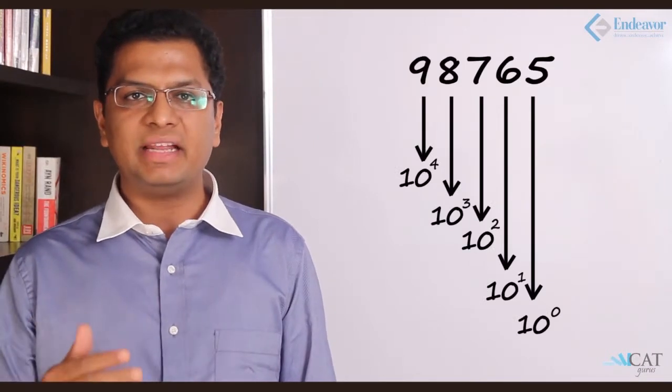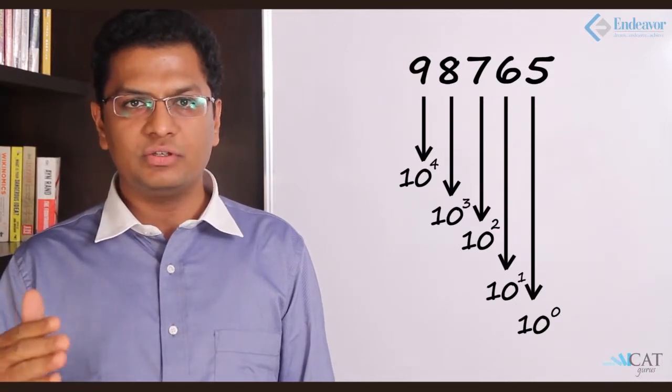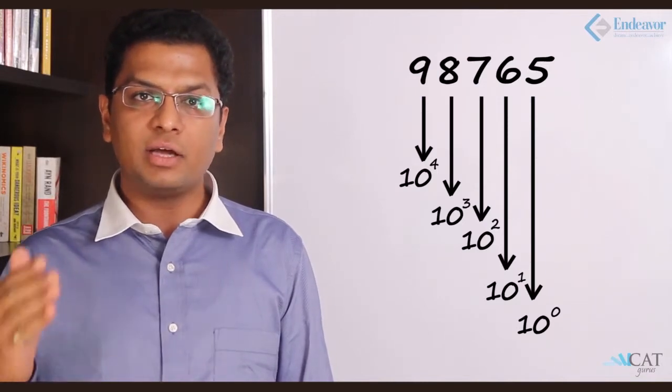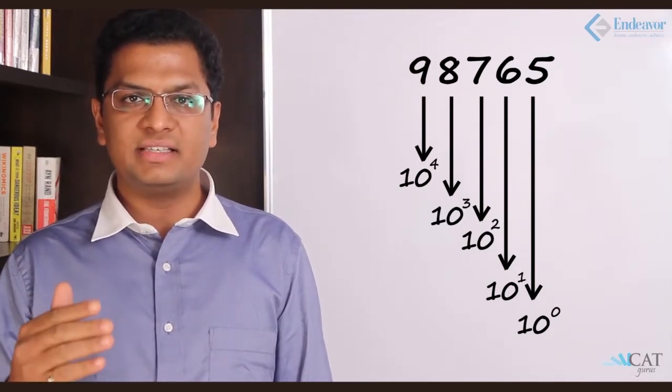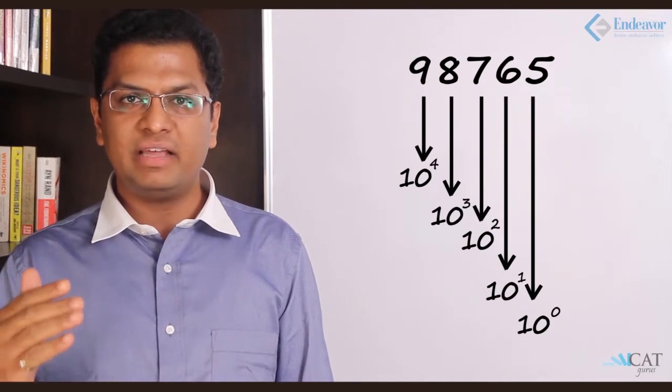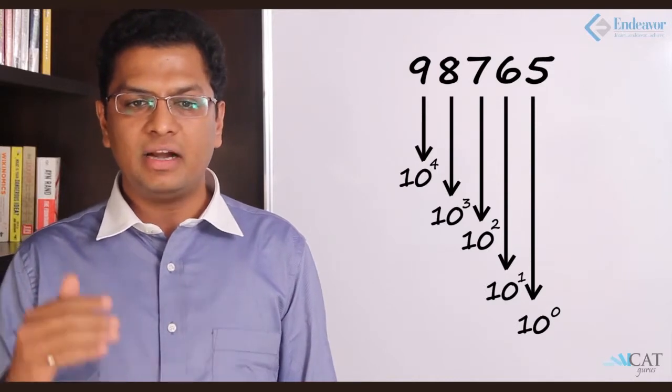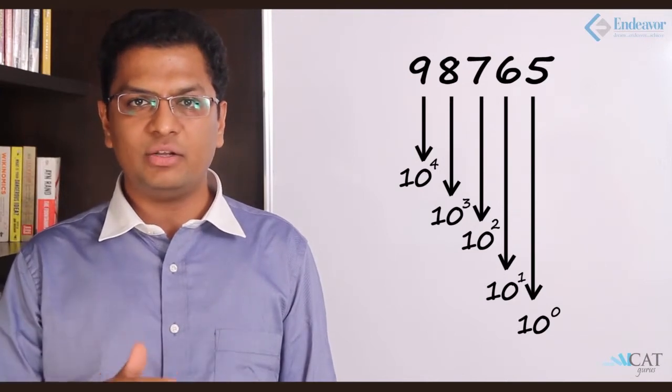Let's go ahead and look at the different value system of a number. There is something called a place value and a face value. Let's take a number for example 98,765. 9 is at the 10,000th place which is 10 to the power 4, 8 is the thousands place which is 10 to the power 3, 7 is at the hundreds place which is 10 to the power 2, 6 is at the tens place which is 10 to the power 1, and 5 is at the units place which is 10 to the power 0. The place value of 7 here is 10 to the power 2 and place value of 6 here is 10 to the power 1.